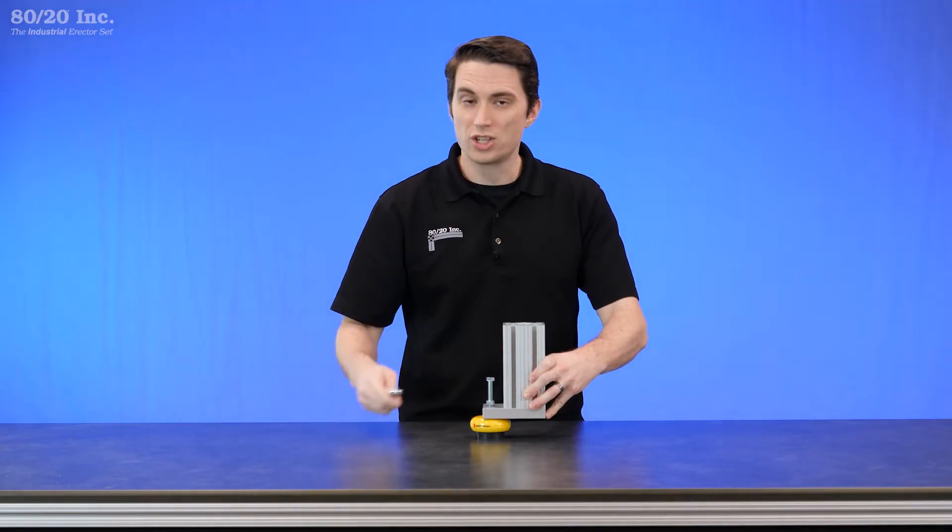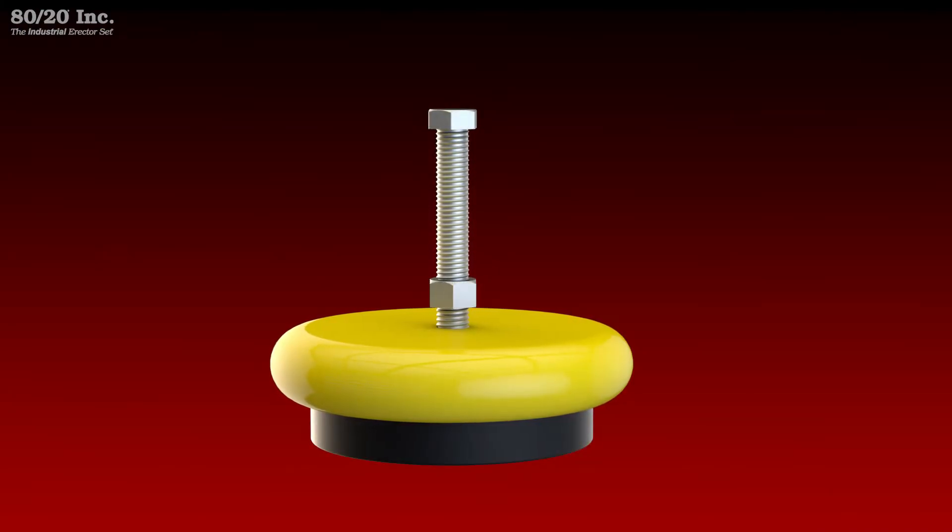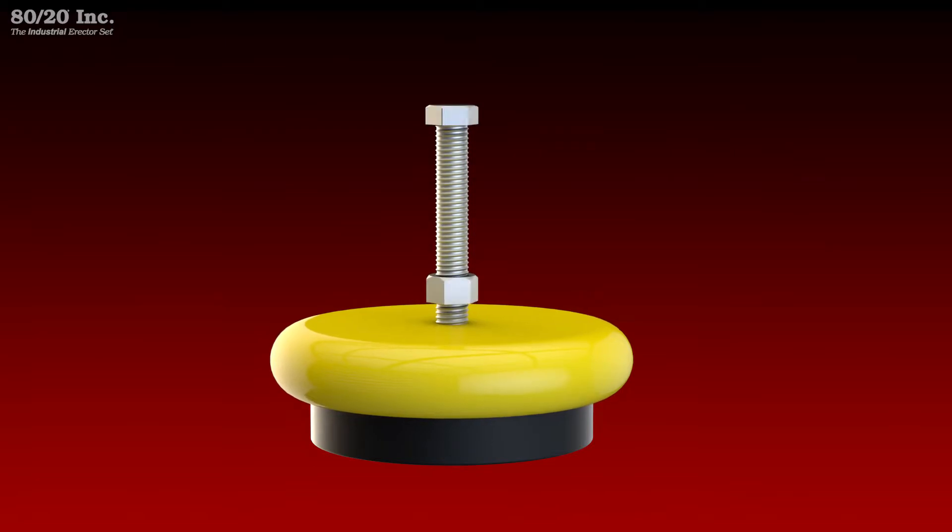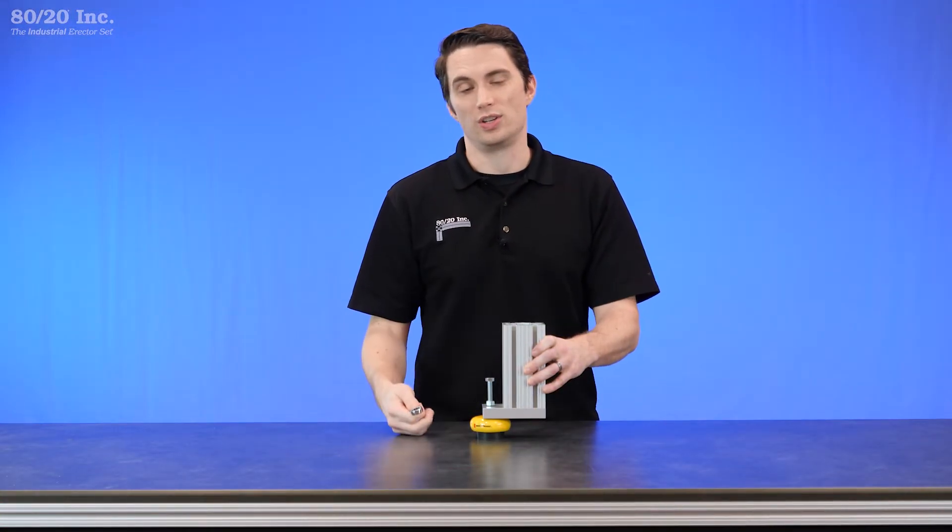Once we've got that on there, we'll take our wrench and as we tighten this down, it'll actually raise up our leveling foot. Now the idea behind it is you can raise and lower your foot to level out any application that you're using it on.